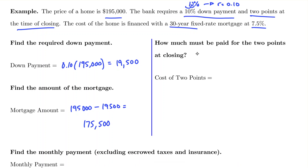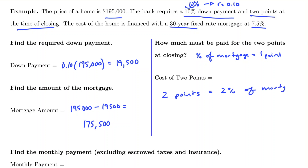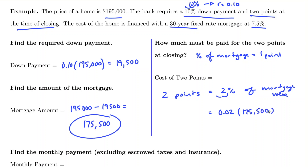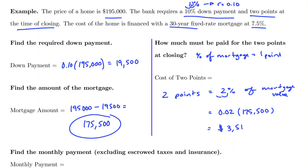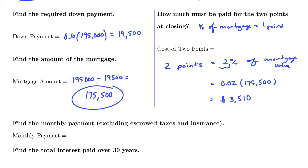Points are 1% of the mortgage per point, so two points equals 2% of the mortgage value. Converting to a decimal, that's 0.02 times the mortgage amount. Using the calculator, we get $3,510 paid for points at closing. Remember, the goal of points is to secure a lower interest rate for the term of the loan.